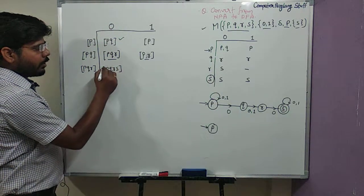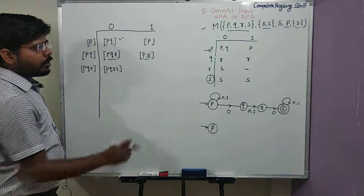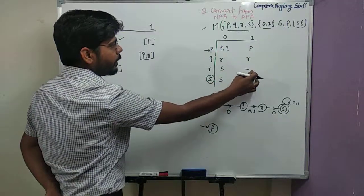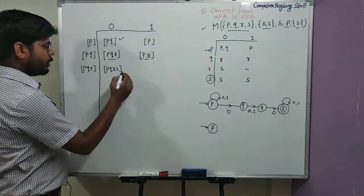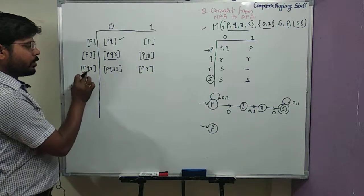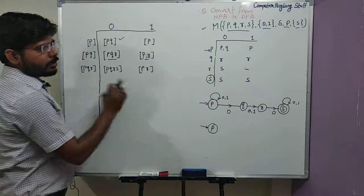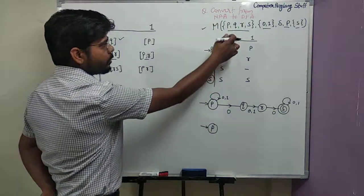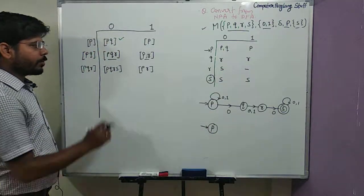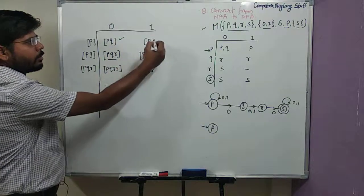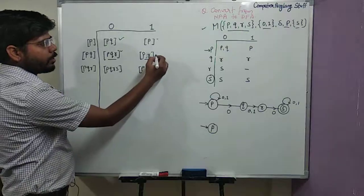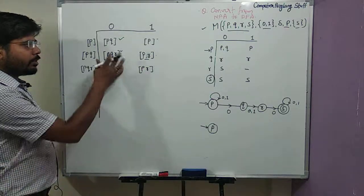For the transition 1 from state P,Q,R we have P,Q and S. So from state P,Q,R: for input 0 we get P,Q,R,S and for input 1 we get P and R. We have now completed this state. This state is also completed, and now we move to the next new state.